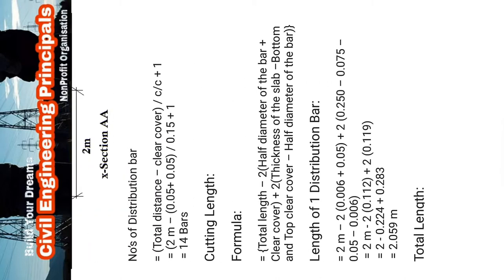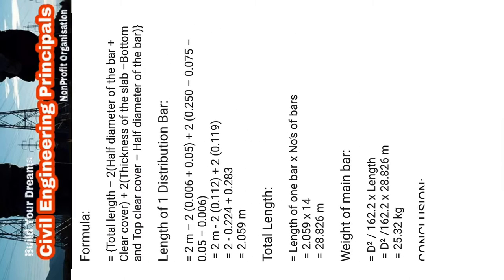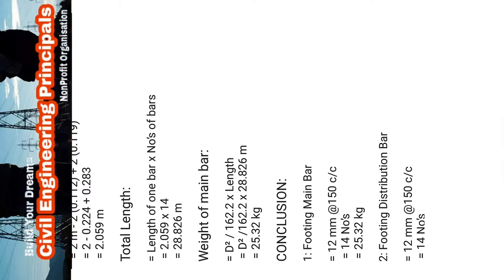Weight of distribution bar: d² divided by 162, multiplied by length. Summary of results: number one, footing main bar — 20 millimeter at 150 center to center — weight = 25.32 kg. Number two, footing distribution bar — 12 millimeter at 150 center to center — weight calculated similarly.